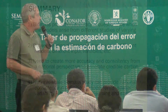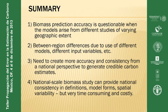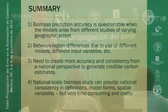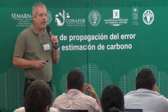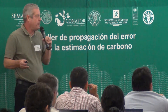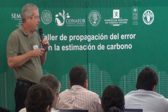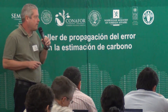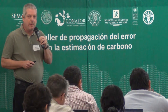To summarize: biomass prediction accuracy is questionable when models arise from different studies of varying geographic extent. Between-region differences due to the use of different models and different input variables can be pretty large. We need to create more accuracy and consistency from a national perspective to generate credible carbon estimates - when you see graphs like those shown, it's hard to convince people that carbon estimates are reliable. The national scale study can hopefully get us to where we want to be, with national consistency in definitions and model forms and an understanding of how things vary across the landscape, though it takes a lot of time and money to get there.